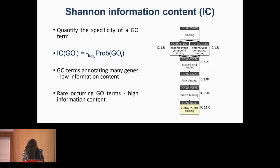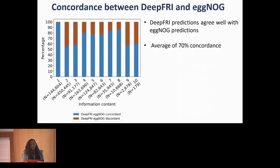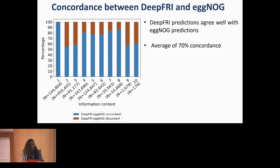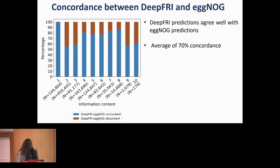Comparing the two methods, we first look at concordance — how well do they agree? Concordance is defined as, for each gene predicted by both EggNOG and DeepFRY, how well do those annotations agree? Looking at concordance across species, the orange bars are discordant and the blue bars are concordant. The agreement between DeepFRY and EggNOG is high, ranging from 50% to 90% in some sparse regions, meaning that DeepFRY does not just randomly predict GO terms.